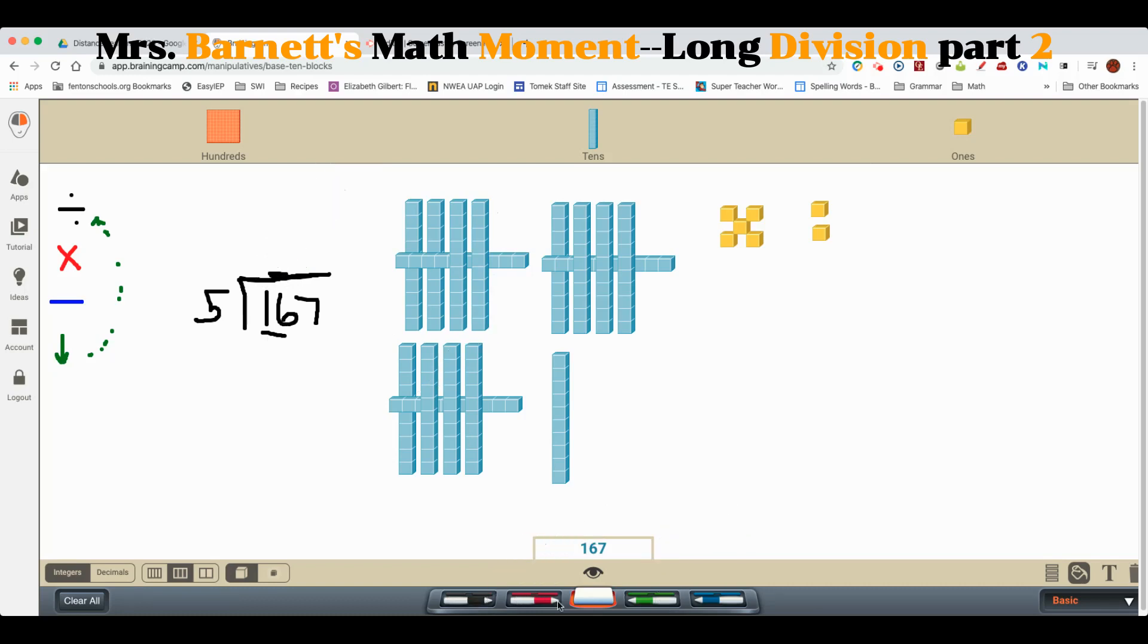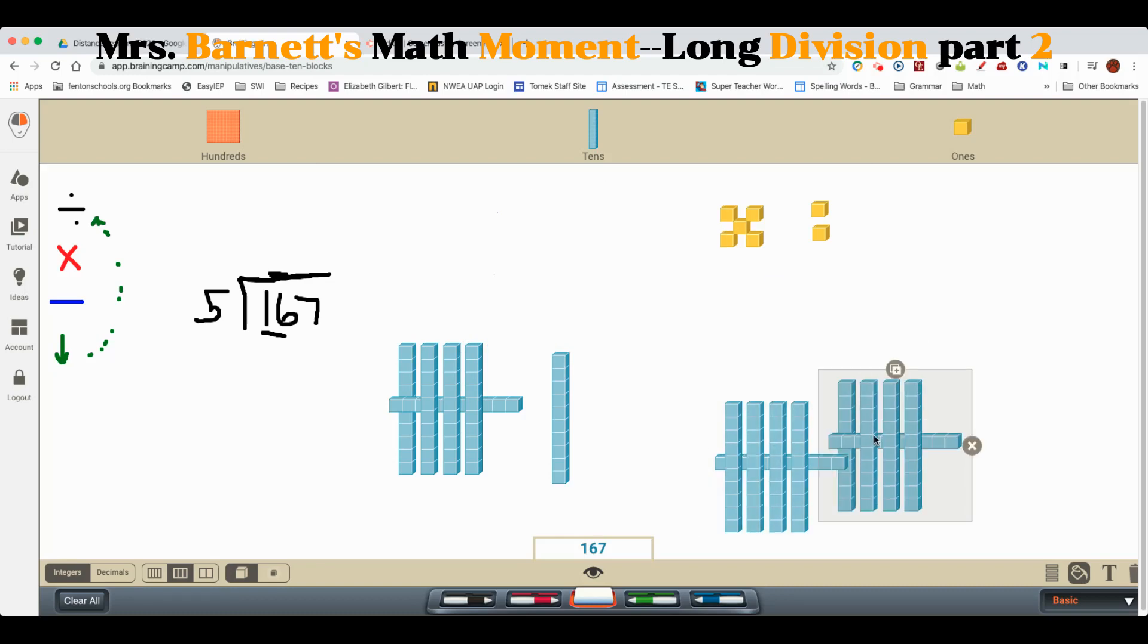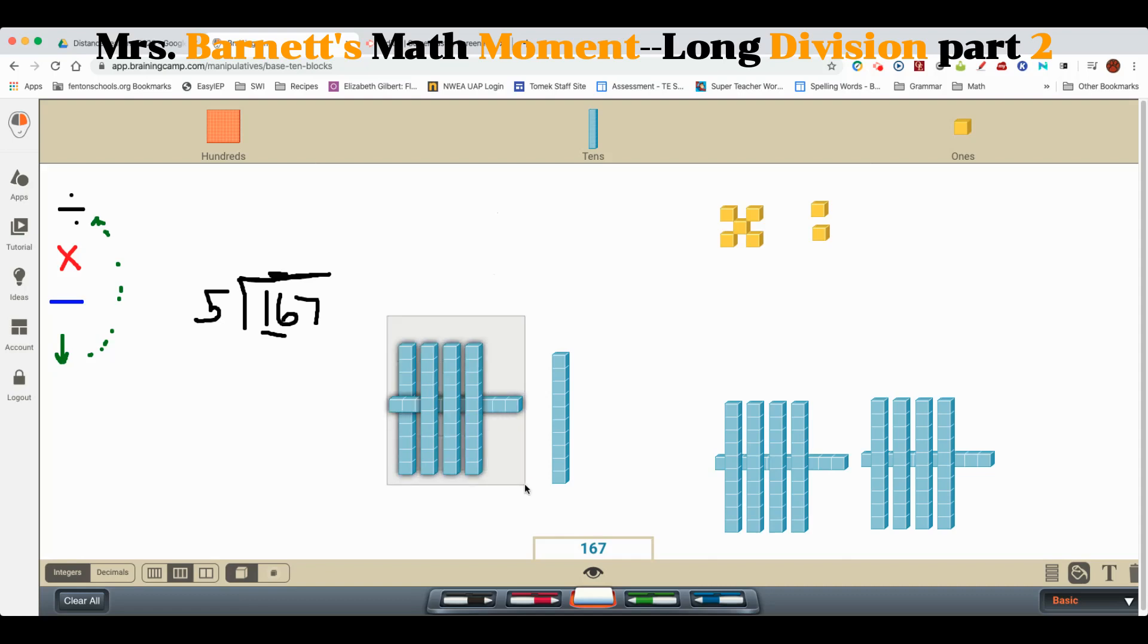So my answer goes up here above the 16. I'm going to leave this blank this time to show you another way that it can be done. So can I take these and make groups of five? Absolutely. I can take these five, put them in a basket. I can take these five, put them in a basket, and these five and put them in a basket.